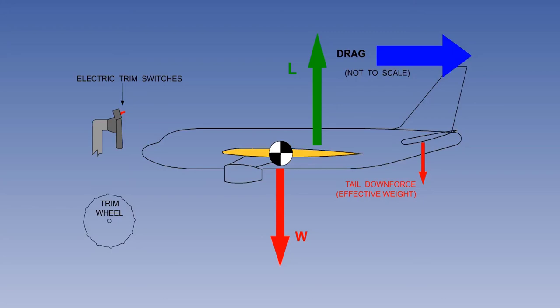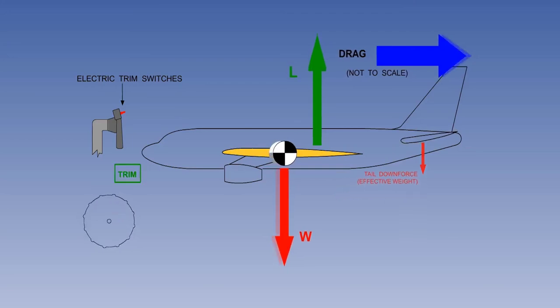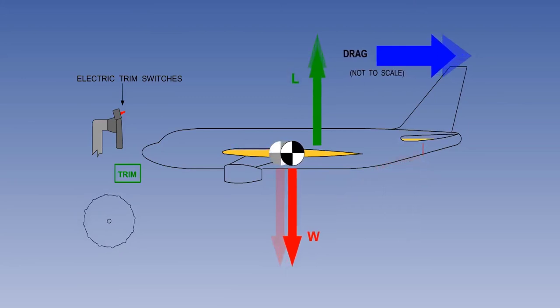Pumping the fuel to move the CG is an automatic function and in practice is a slow and almost continuous operation. But as usual, we have exaggerated the illustration for clarity. Please note that the trim switches are not being used, but the tailplane is changing incidence to maintain equilibrium as the fuel is being transferred from the wing to the tail, another automatic function.